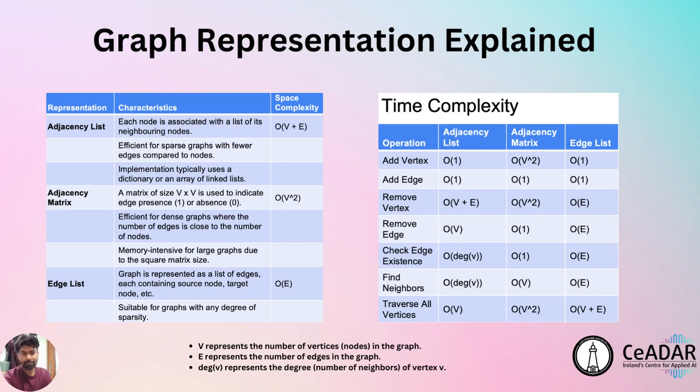There are three types of graph representations: adjacency list, adjacency matrix, and edge list. The adjacency list representation is efficient as it only stores the neighboring nodes for each node, resulting in a space complexity of O(V + E), where V is vertices and E is edges. It has constant time for adding vertices and edges and uses a dictionary or an array of linked lists to implement the graph.